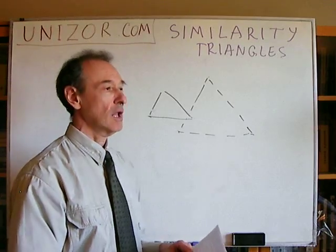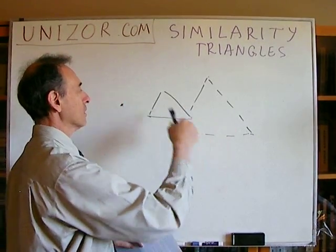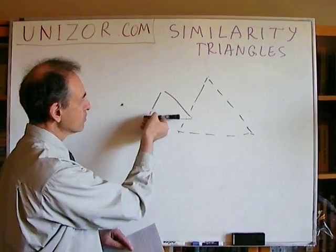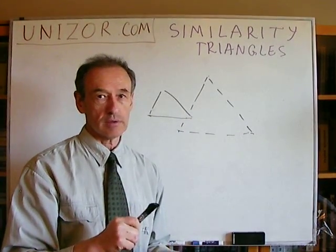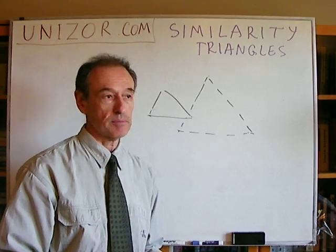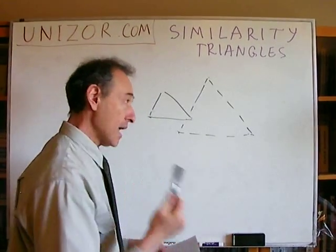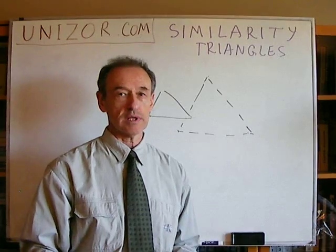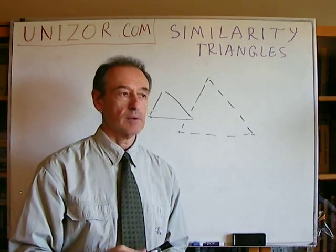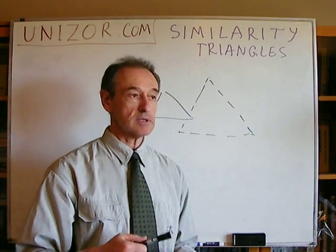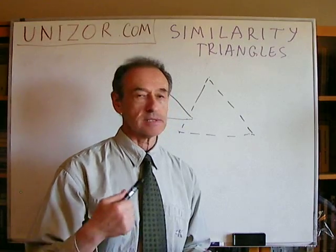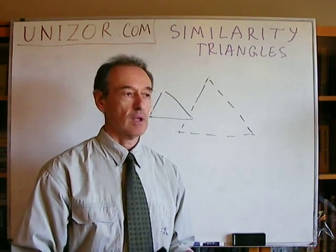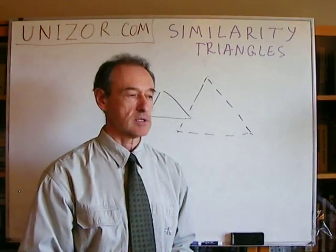Another simplification: you don't have to have all three angles equal and all three sides proportional. You can have only one angle equal to another and the sides which form these angles proportional to each other — that is also sufficient for similarity. And the third: it's enough to have three sides proportional — that is also sufficient for similarity. When I say sufficient for similarity, I mean there is a scaling which would transform one triangle into another, possibly combined with some parallel shift.